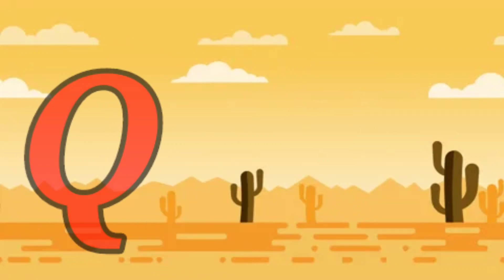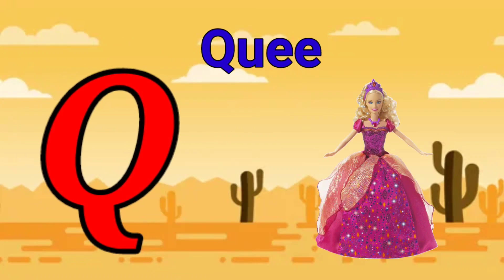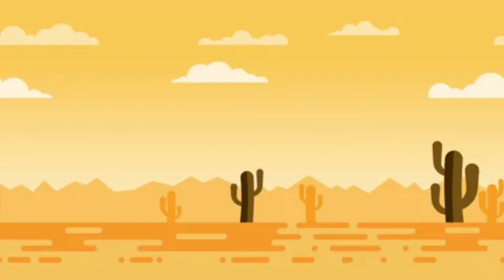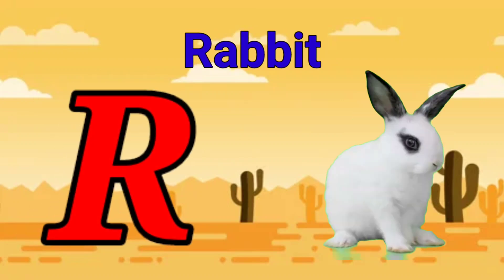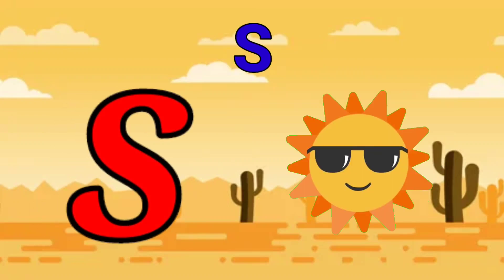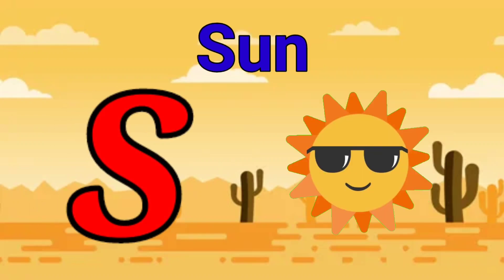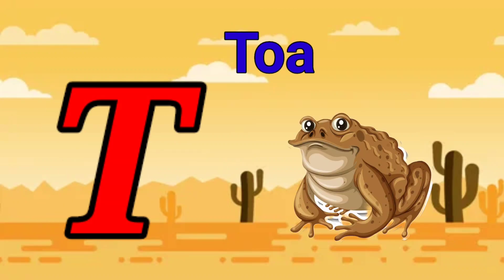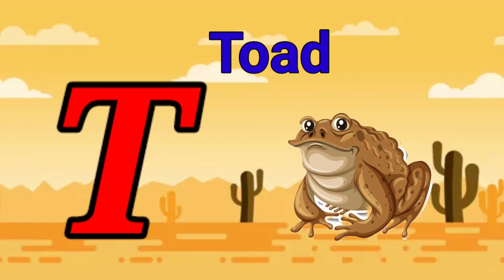Q is for queen, q-q-queen. R is for rabbit, r-r-rabbit. S is for sun, s-s-sun. T is for toad, t-t-toad.